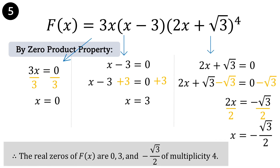Therefore, the real zeros of f of x are 0, 3, and negative square root of 3 halves of multiplicity 4. Let us check if the zeros of the function are complete. The degree of this function is 6. Counting all the real zeros: 1 plus 1 plus 4 is 6. Therefore, the zeros of this function are complete.